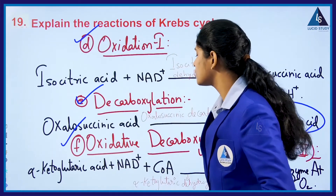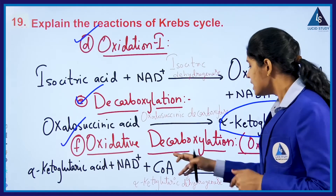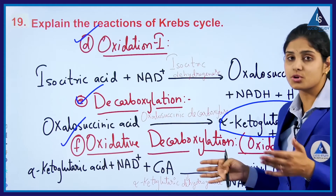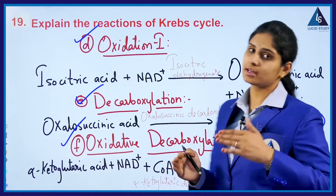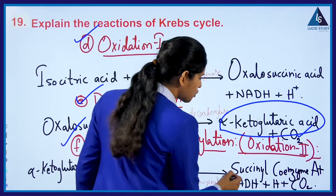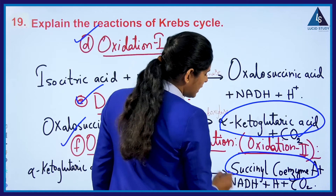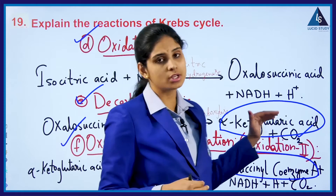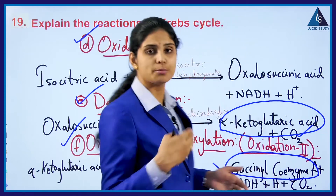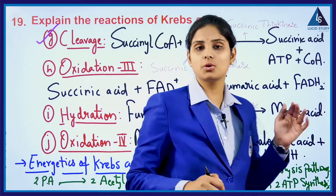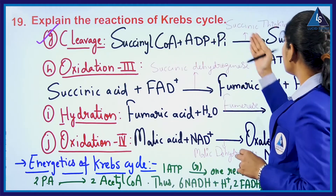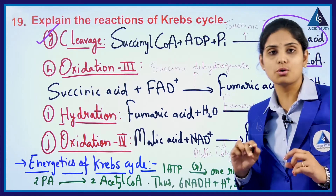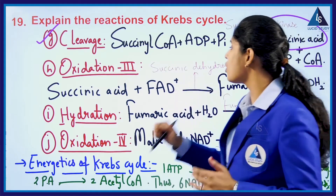The alpha-ketoglutaric acid with NAD+ plus CoA, under the enzyme alpha-ketoglutarate dehydrogenase, helps the formation of succinyl-CoA and NADH plus H+ and carbon dioxide. This is oxidation 2, followed by the cleavage process where succinyl-CoA along with ADP and Pi under succinyl thiokinase helps the formation of succinic acid, ATP, and CoA.